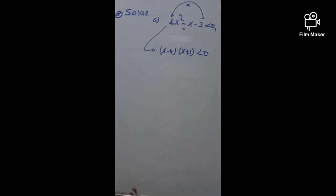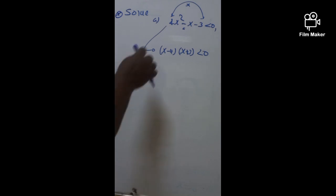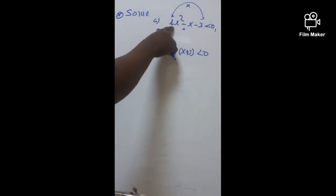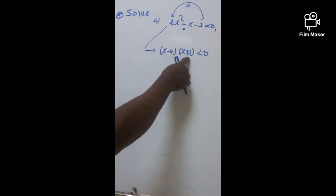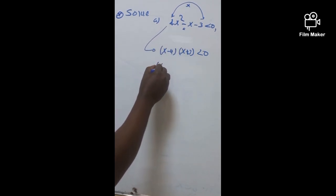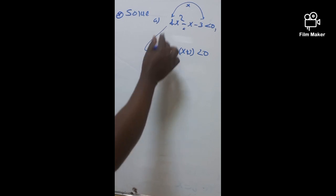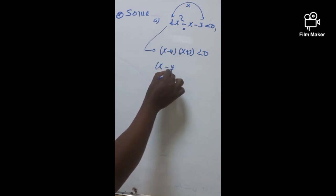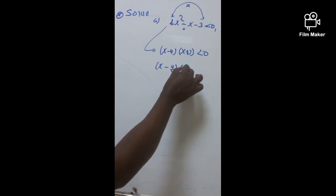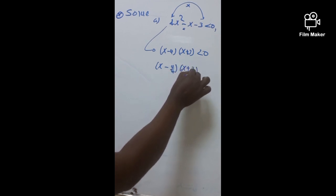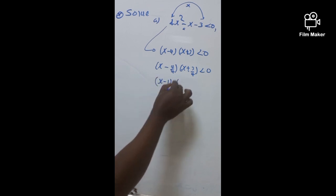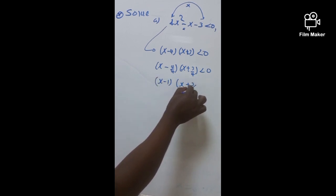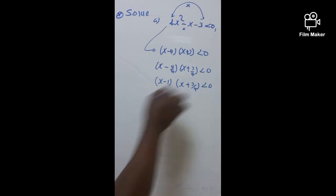Since the coefficient of the leading term is different from 1, we need to divide by the coefficient, giving negative 4 and 3 over 4. That will be x minus 4/4 into x plus 3/4, which is less than 0. And hence, this simplifies to x minus 1 into x plus 3/4, which is less than 0.